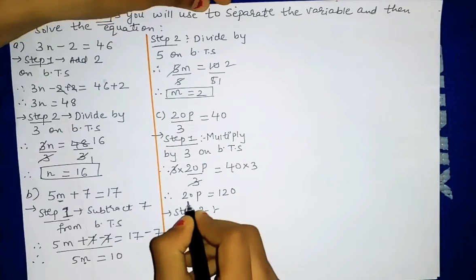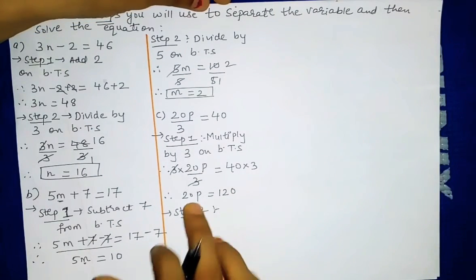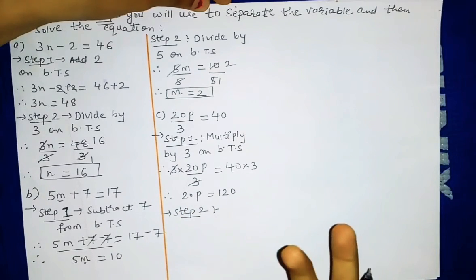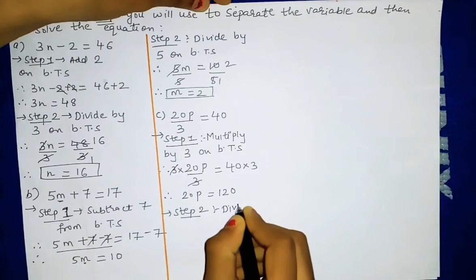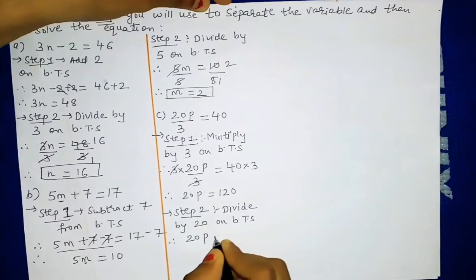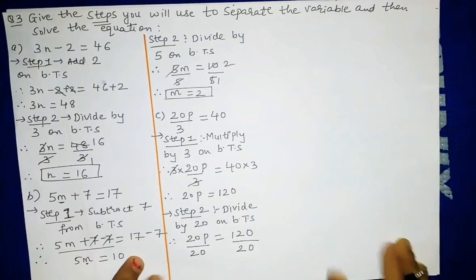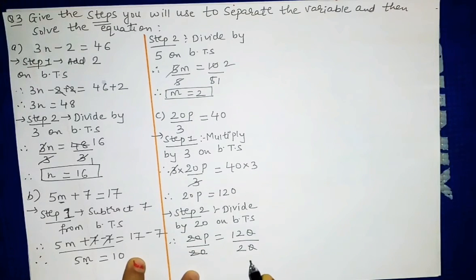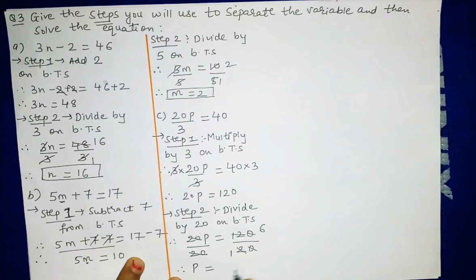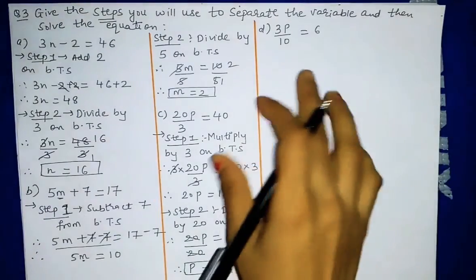Our equation is 20p equal to 120. We divide both sides by 20 — the 20s cancel — and 120 divided by 20 gives 6. This side only p is left and this side 6 is left. So p equal to 6 is our answer. The fourth question is 3p upon 10 equal to 6. Again 3 is in multiplication and 10 is in the denominator, so in division.